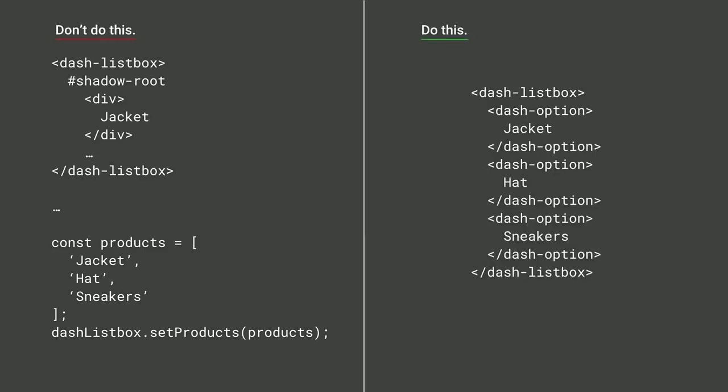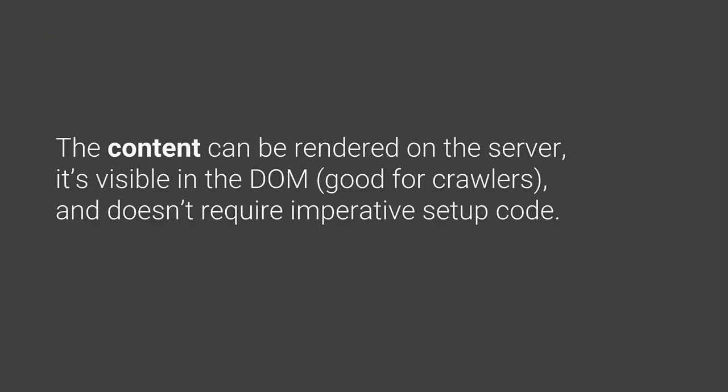Instead, take that monolith and factor it into smaller components. A dash-listbox can have little dash-option children inside it, putting content right there in the light DOM. That's good for crawlers and bots that want to read the page. It also means you can just hand-author this in regular HTML without any imperative JavaScript setup. Your content is in the visible DOM, so it should be crawlable, and there's no imperative setup work happening.